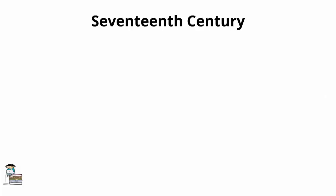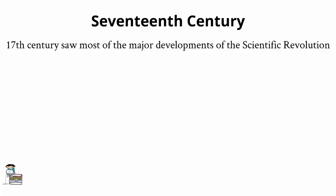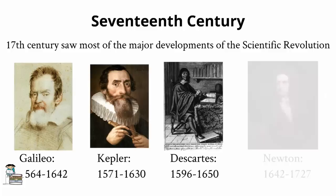While the scientific revolution began in the 16th century, the majority of the major achievements were seen in the 17th century. This was the time which saw the work of such giants as Galileo Galilei, Johannes Kepler, René Descartes, and Isaac Newton, to name but a few.